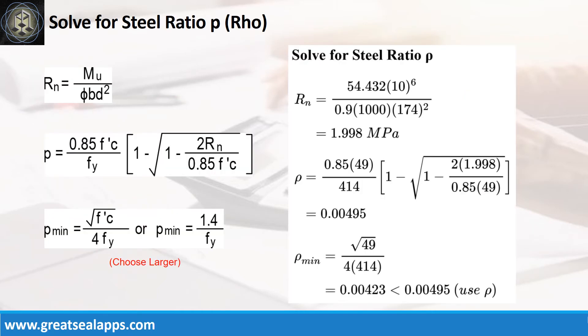Given maximum moment equals 54.432 kN per meter, resistance factor equals 0.9, B equals 1000 mm, and D equals 174 mm, the beam design ratio RN equals 1.998 MPa, and reinforcement ratio rho equals 0.00495.